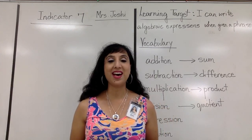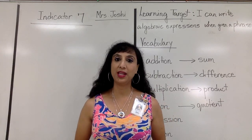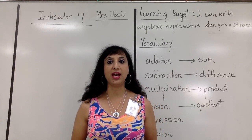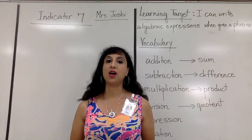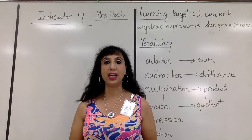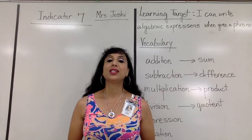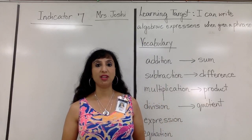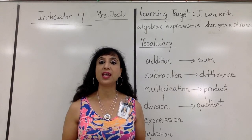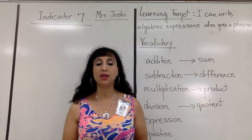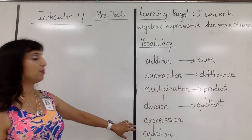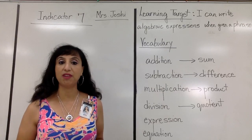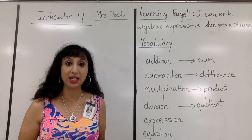Good morning. We are going to be beginning Unit 3 today. Unit 3 comprises indicators 7 through 11, and I'm doing indicator 7 now. Our learning target is: I can write algebraic expressions when given a phrase. You'll be provided a phrase and you have to convert it into an expression. We're going to talk about the difference between an expression and an equation, because later you'll have to write an equation — there's a difference between the two.